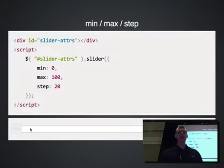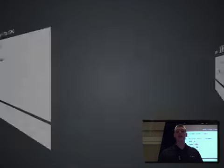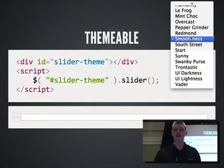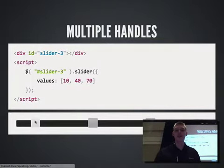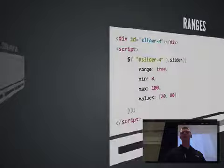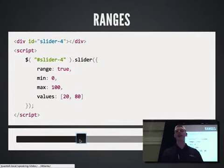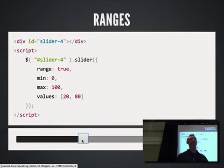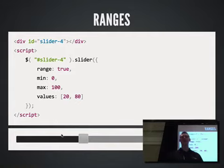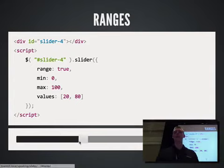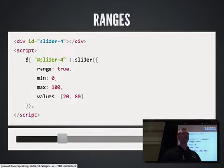jQuery UI's Slider, to contrast, gives you the same min, max, and step controls. It's themeable — you can switch to the vader theme. You get multiple handles, which is pretty common — if you've done any online shopping, usually there's a filter control like this. They're actually adding a multiple attribute to range controls in the spec, though it's still in early stages with no browser implementations. Hopefully this type of thing will be possible directly in the browser in maybe a few years.